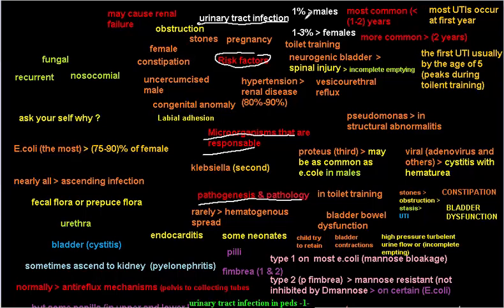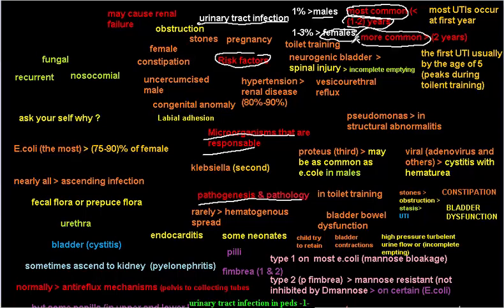Starting with epidemiology: in the first one to two years of life, urinary tract infection is most common in males. After that, it becomes much more common in females due to the short and wide urethra. The overall ratio is about 1% in males and 1 to 3% in females, so it is more common in females overall.